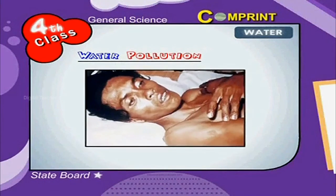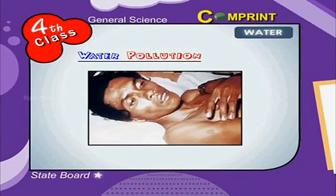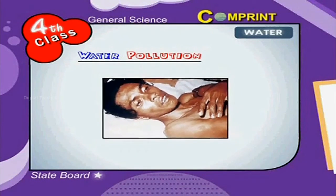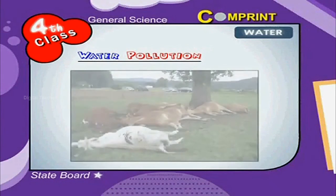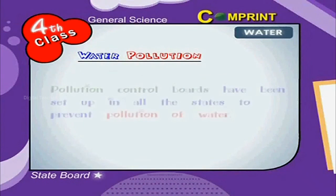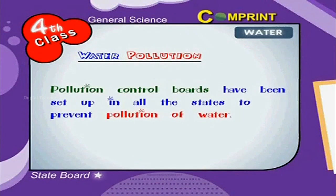Water pollution causes the spread of diseases. Plants are destroyed and cattle are killed. Pollution control boards have been set up in all the states to prevent pollution of water.